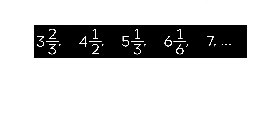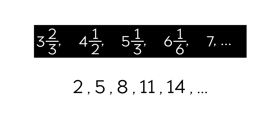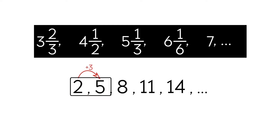Let's take a look at a sequence of whole numbers. We can see that the sequence is increasing because the numbers get larger. To find the rule, let's look at a pair of consecutive terms — for example, 2 and 5. We subtract 2 from 5 to get 3, so the rule is to add 3 for each term.